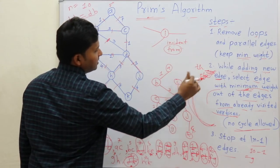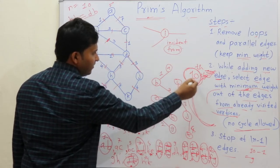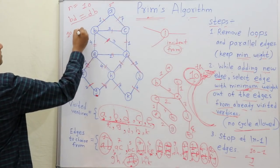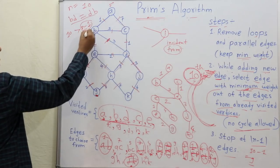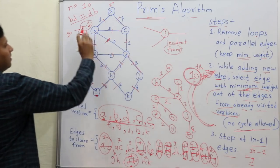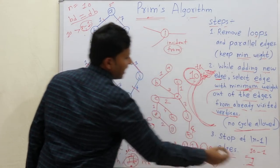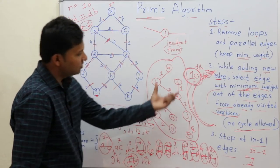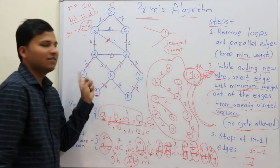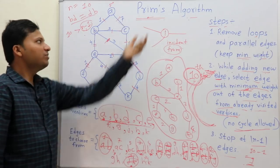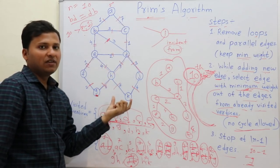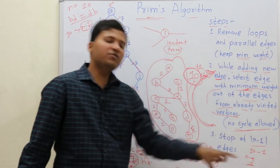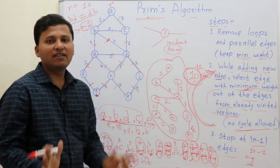Now we would go for the 10th edge, but 10 is greater than n−1, which is 9 here since n=10. So here we stop. As 9 edges are complete in this spanning tree, the algorithm terminates. This is the minimum spanning tree for this graph. The key step in Prim's algorithm is: select the edge with minimum weight from the edges of already visited vertices, and never form a cycle.